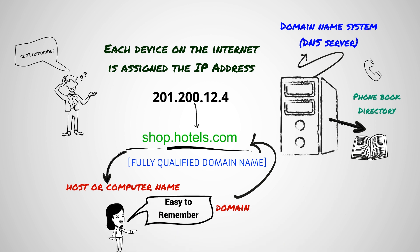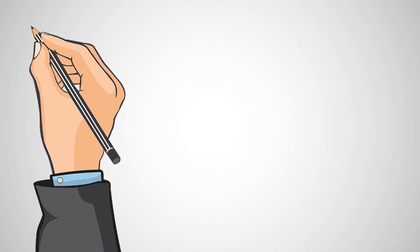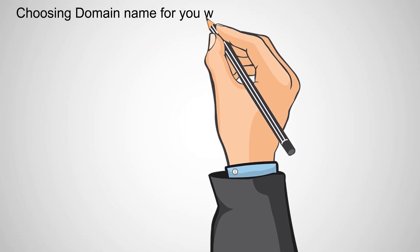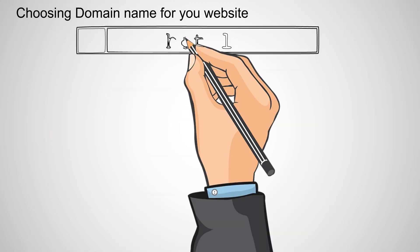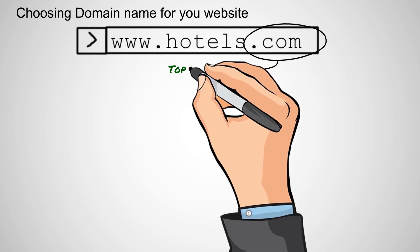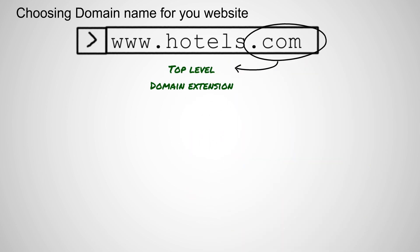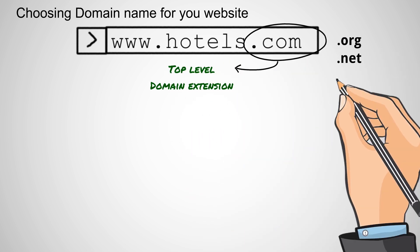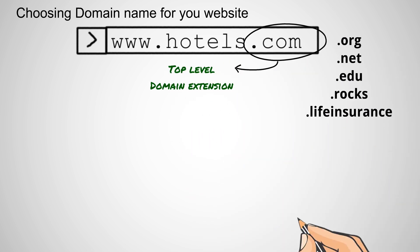When purchasing a domain name, consider these things. The top level of a domain name refers to the part that comes after the period; it's also known as the domain extension. There will be more and more extensions coming.